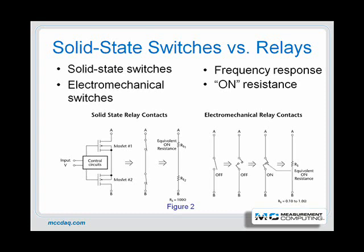Electromechanical relays, for example, are relatively slow — about 1 kHz or less for the fastest reed relays. But they can handle large input voltages, and some can isolate several thousand volts. A relay's size and contact type determine its current carrying capacity. Laboratory instrument relays typically switch up to 3 amps, while industrial applications use larger relays to switch higher currents.